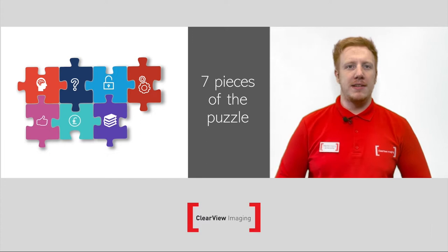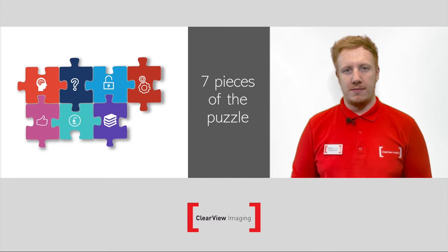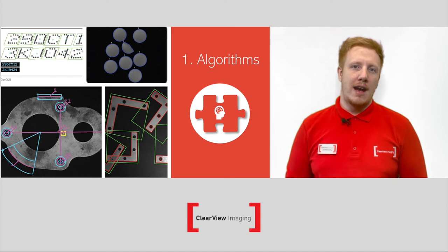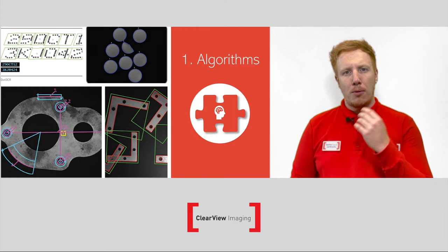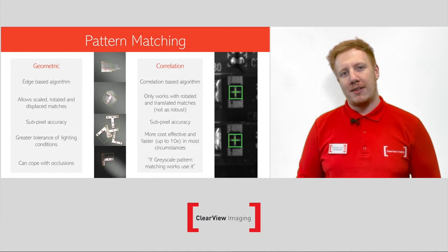We're going to break this down into seven pieces of a puzzle. Not all of these pieces are technical, but they are all vital for a working system. The starting point here is software, and in particular algorithms, which are the brains of any vision system. There are several of these algorithms that exist, depending on what your application needs to do. It's important that the correct algorithm is used for the correct application. I'm going to run through three of the most commonly used ones in vision systems today.